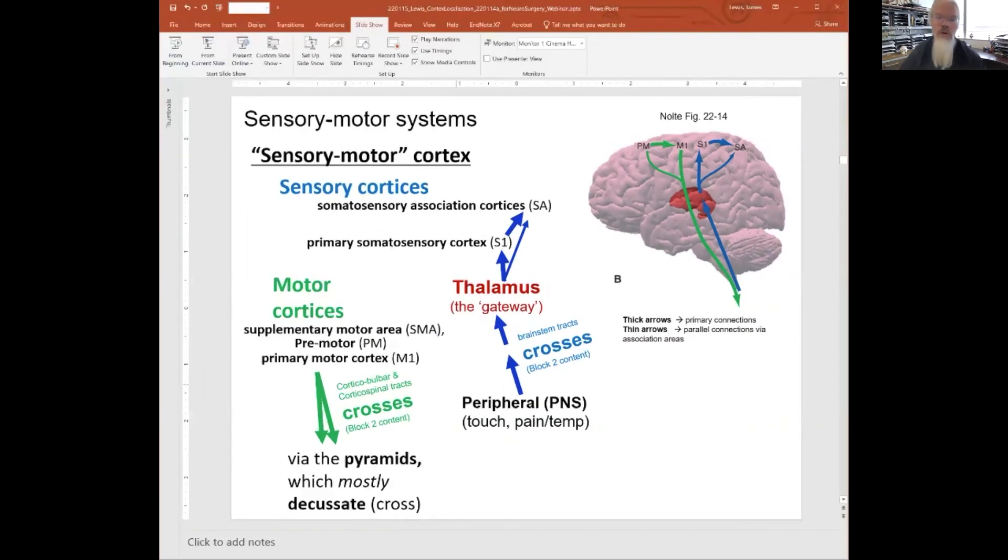You learn in the first couple blocks of a neuroscience course that there are all these tracks and pathways coming up the brainstem to get to the cortex. We're going to bypass those, other than to say: the peripheral nervous system—touch, pain, temperature—comes up into the thalamus. The thalamus then projects that information to primary somatosensory cortex and somatosensory association cortices. There's a crossing here.